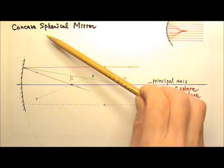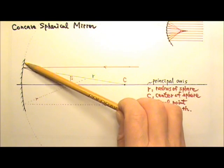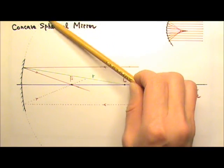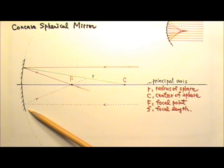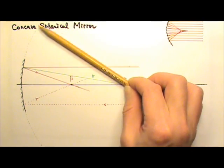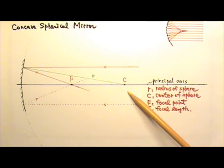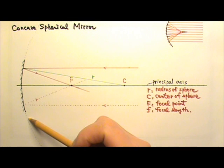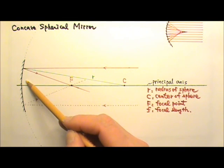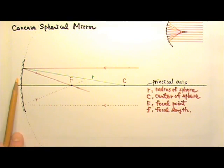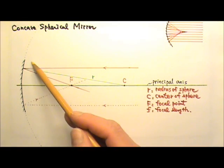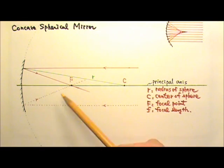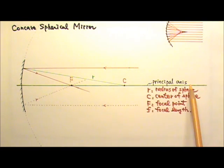Our next topic is spherical mirrors. A spherical mirror is a curved mirror that is part of a spherical surface. For example, this spherical mirror in my diagram is part of a sphere with its center at C. When I draw a mirror this way, the front side is the shiny side of the mirror, and the back is the silver side. We say this mirror is a concave mirror because the shiny side caves in, and this axis is called the principal axis.